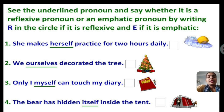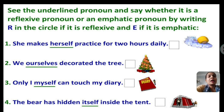In this exercise, you can see the underlined pronoun and now you have to say whether it is a reflexive pronoun or an emphatic pronoun by writing R in the circle if it is reflexive, and E if it is emphatic.